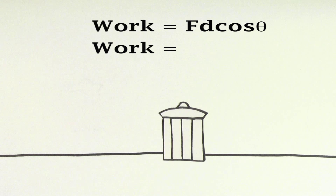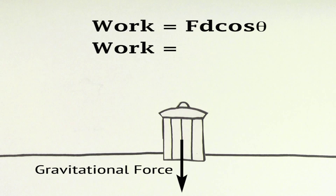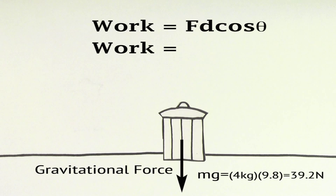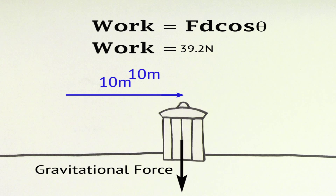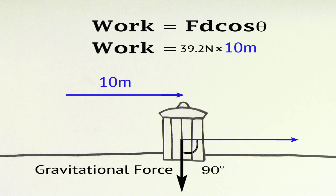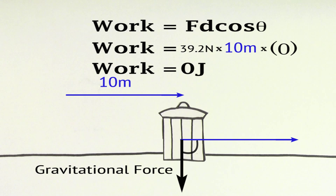Now let's figure out the work done by the gravitational force. The force of gravity is mg, so the force of gravity is 4 kilograms times 9.8 meters per second squared, which is 39.2 newtons. The displacement is again 10 meters. But the angle between the gravitational force and the direction of the displacement is 90 degrees in this case. Since cosine of 90 is 0, the gravitational force does no work on this trash can.